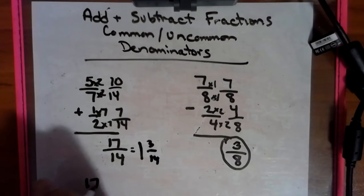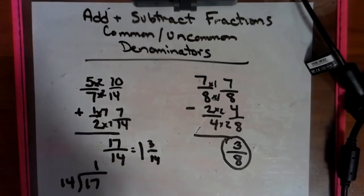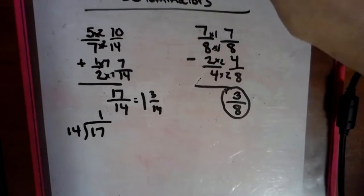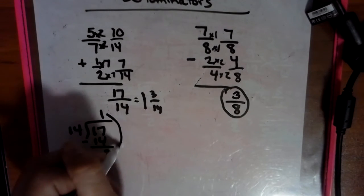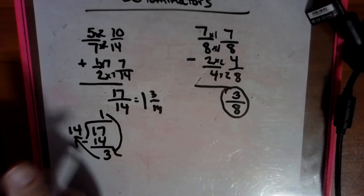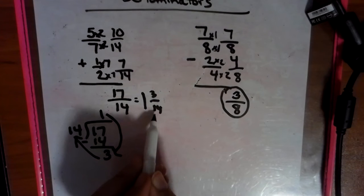Or we can look at it as 17s on the inside of the division box, 14s on the out. 14 goes in one time, makes 14, subtract, we get 3, 1 and 3 fourteenths. 1, 3 fourteenths. Just like here.